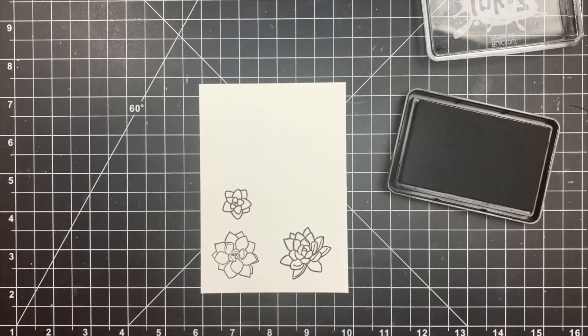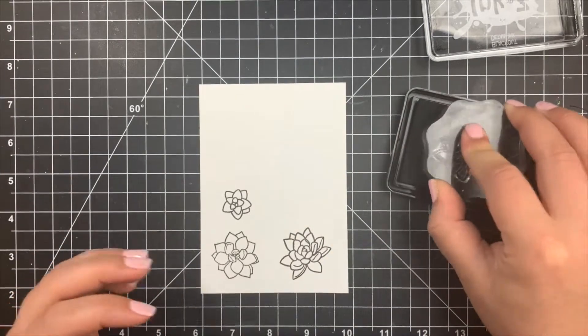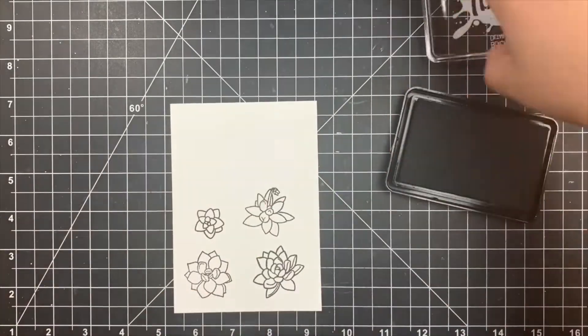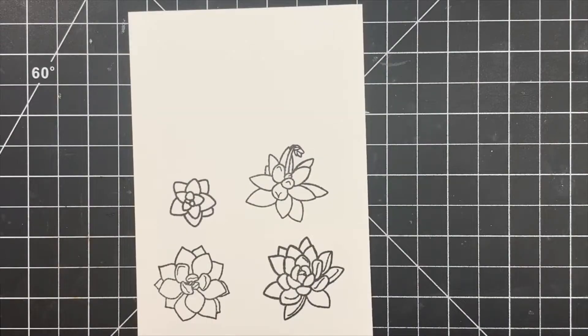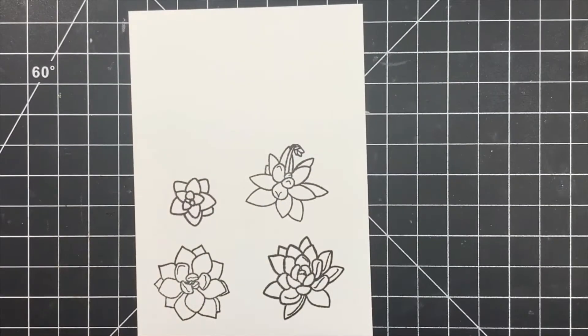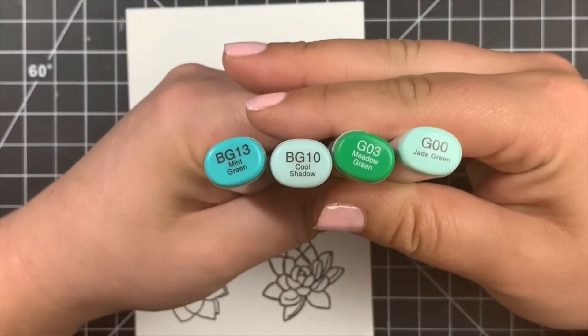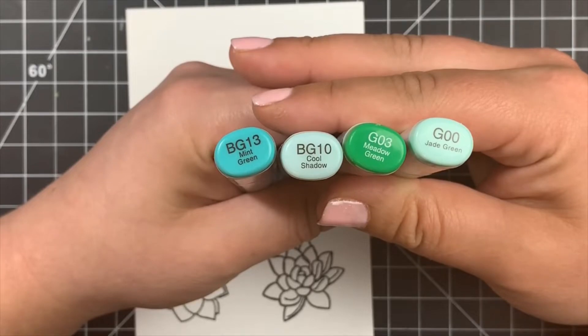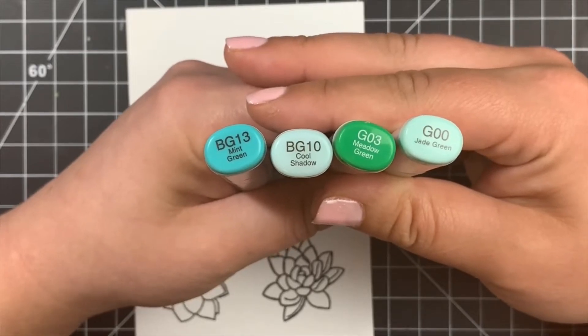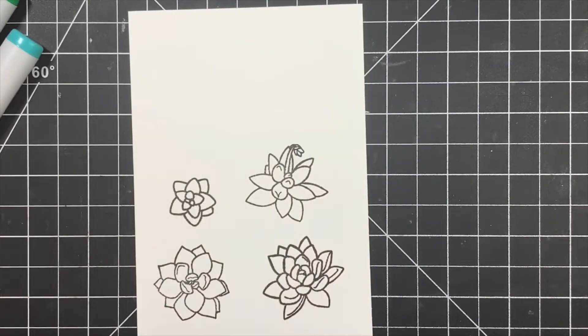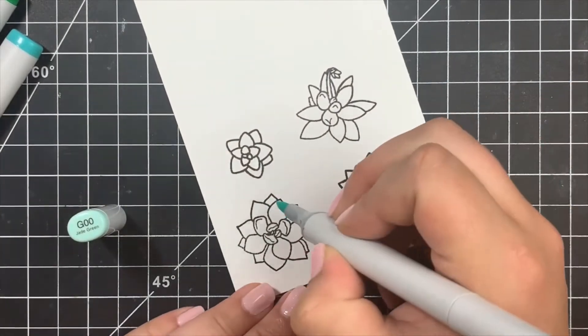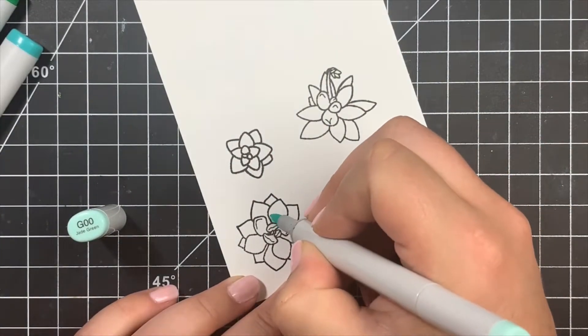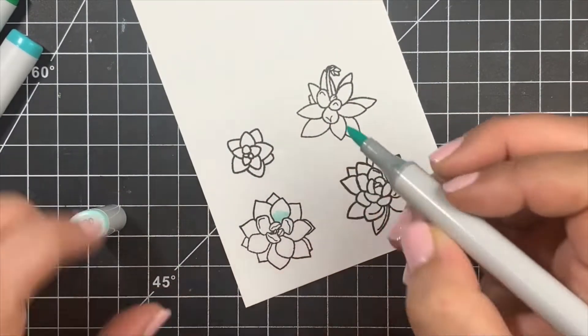For the coloring, we're going to be using different color families and mixing them together. We'll start off simple with some greens and some blue greens. The colors that I chose, the ones that will go next to one another, have the same last number. So the BG10 and the G00 will blend nicely together because they both end in zero.